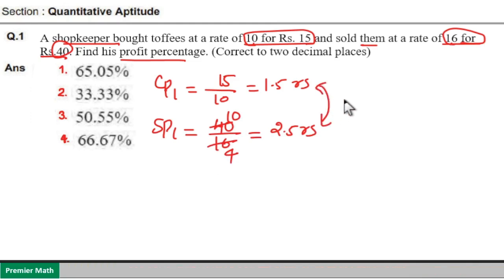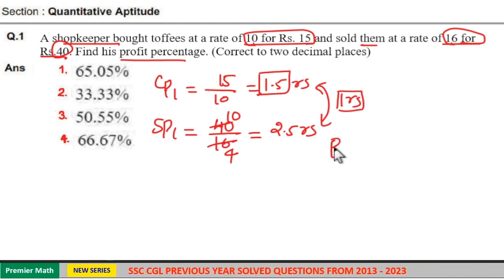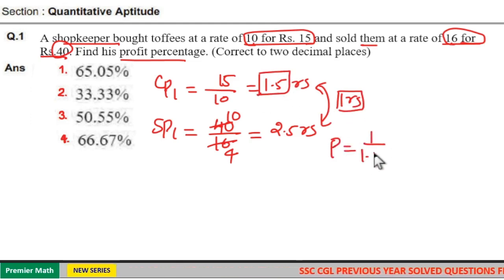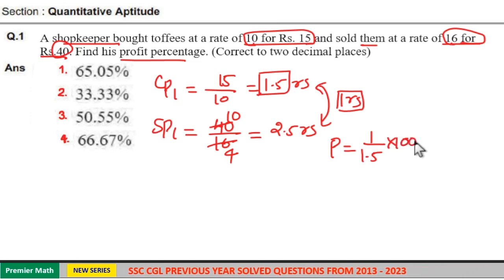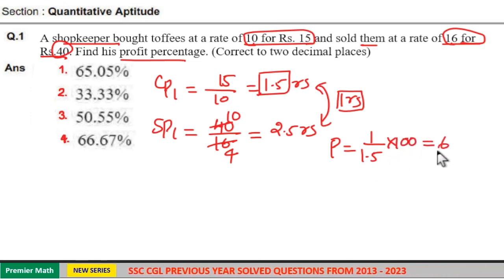The difference between sell price and cost price is 1 rupee. This 1 rupee is generated from 1.5 rupees. So profit percentage is equal to 1 divided by 1.5 into 100, which is equal to 1000 by 15. That is 15 goes 6 times in 100, remaining 100.